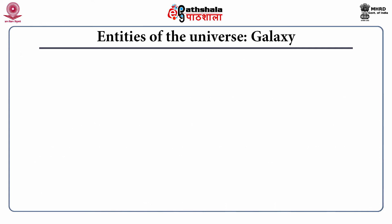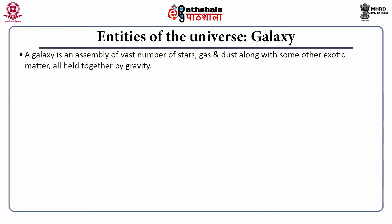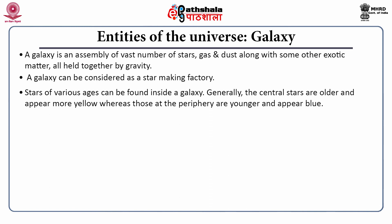Let us discuss the various entities of the universe, starting with galaxies. A galaxy is an assembly of a vast number of stars, gas, dust along with some other exotic matter, all held together by the force of gravity. Stars of various ages can be found inside a galaxy. Generally, the central stars of a galaxy are older and appear more yellow, whereas those at the periphery are younger, more active, and appear blue.